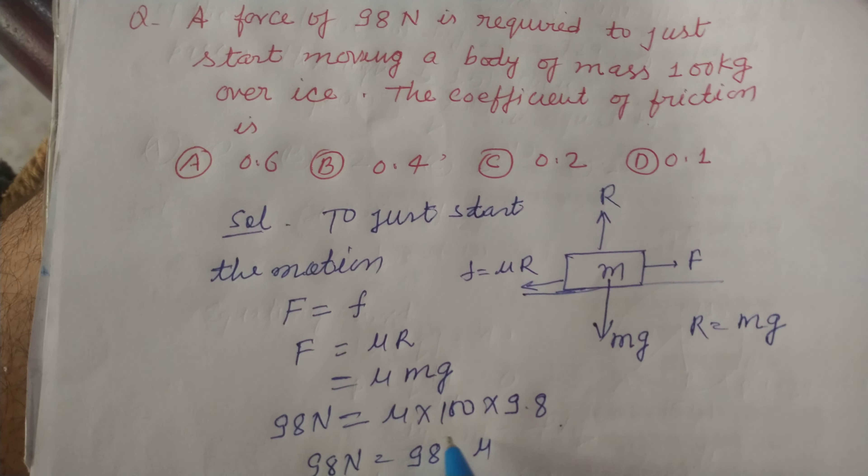98 N equals mu times 100 times 9.8, which equals 980 mu. Dividing, we get mu equals 1/10. So mu is equal to 0.1.